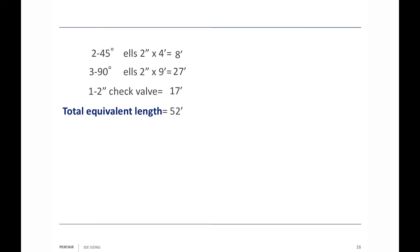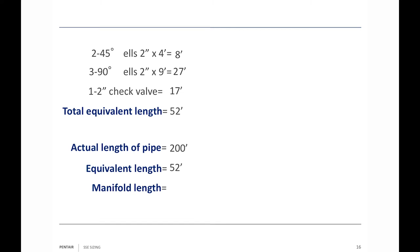Adding it all together: actual pipe length is 200 feet, equivalent length for fittings is 52 feet, plus the two-inch 30-foot manifold down the middle. Total effective pipe length for the friction loss chart is 282 feet. The friction loss chart is written in 100-foot lengths, so we divide 282 by 100 and get 2.82 hundred-foot lengths of pipe.